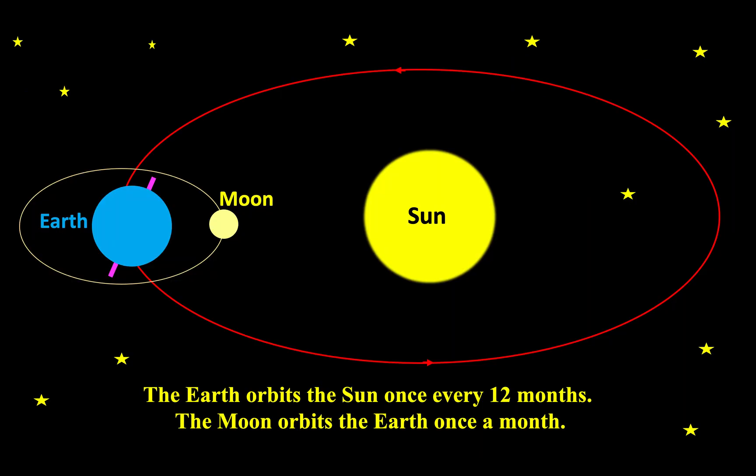The Earth rotates around the Sun in a big orbit once every year or 12 months. Meanwhile, the Moon rotates around the Earth once every month in a much smaller orbit.